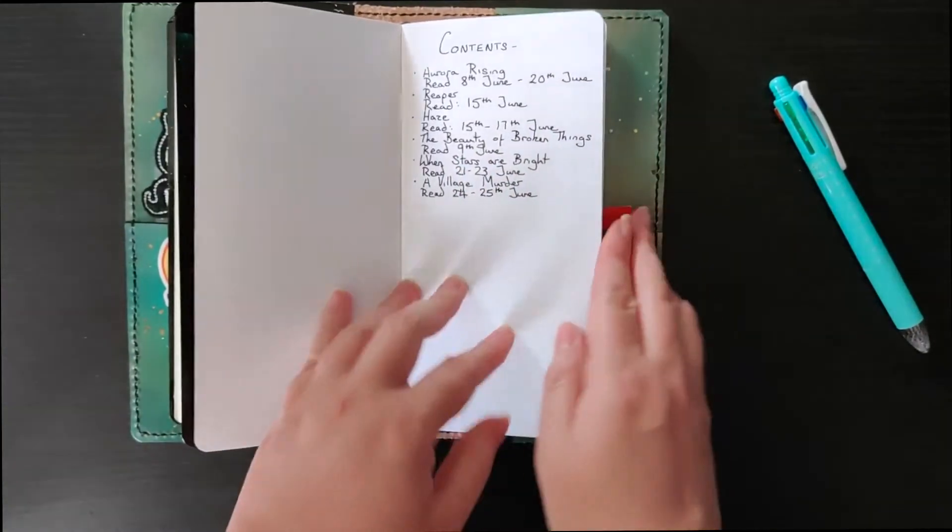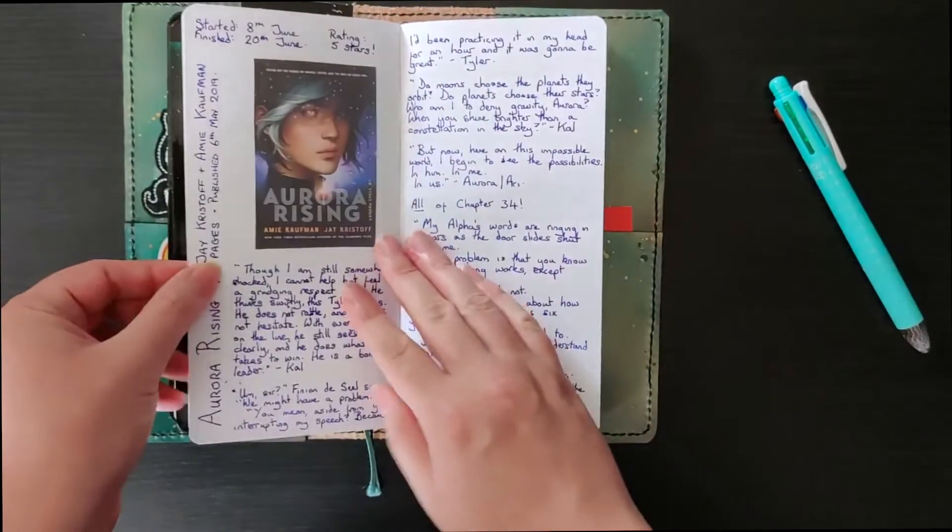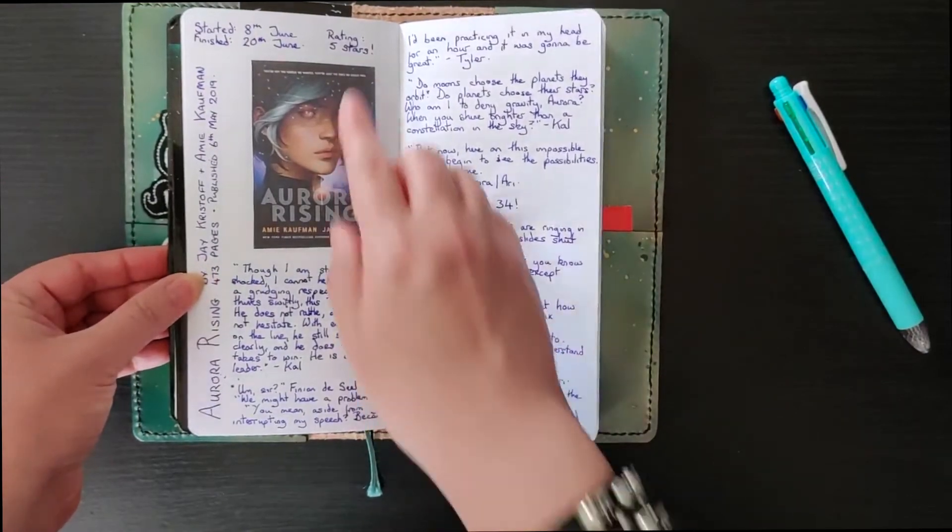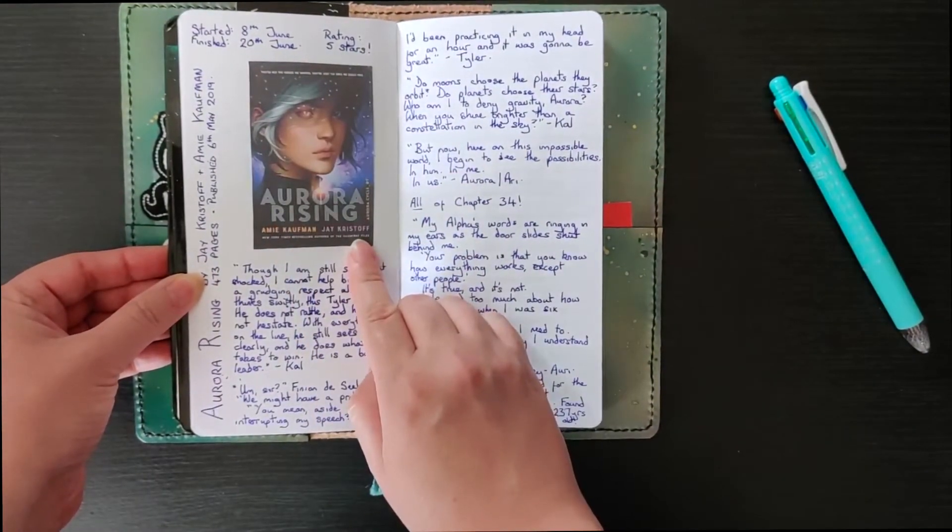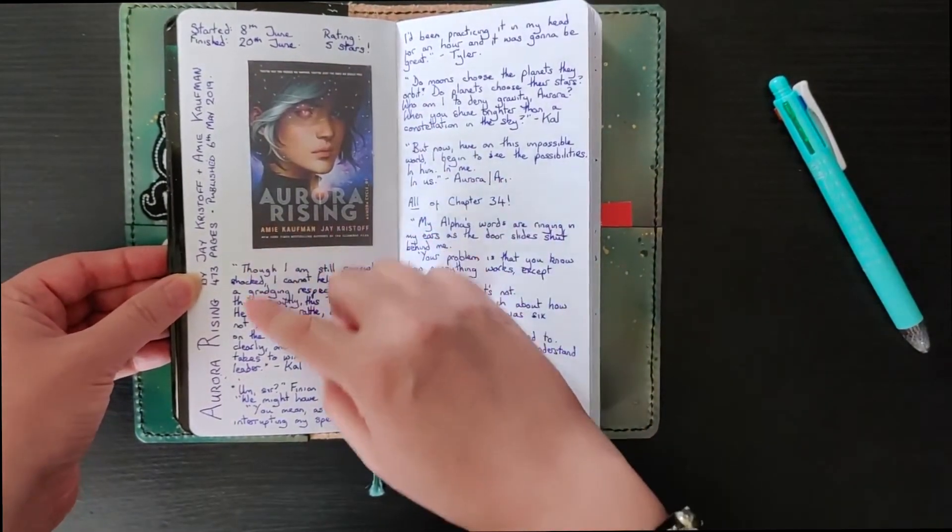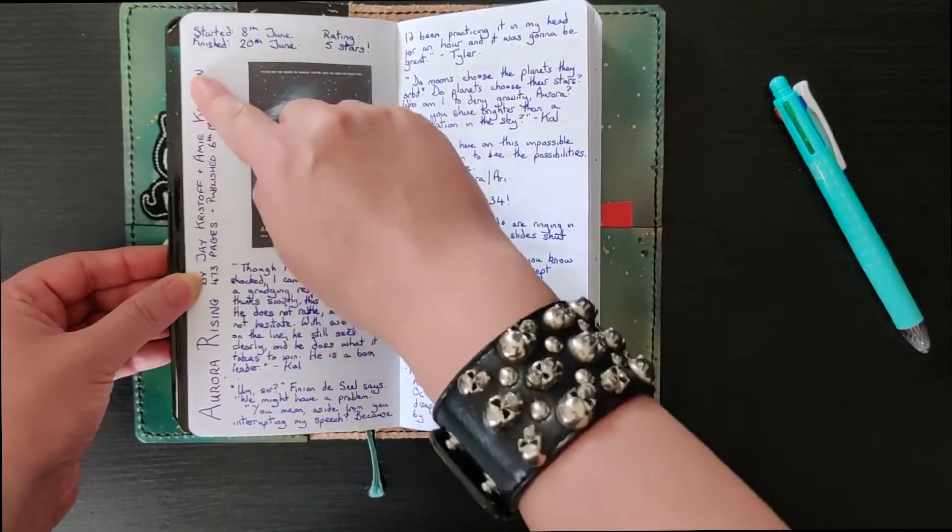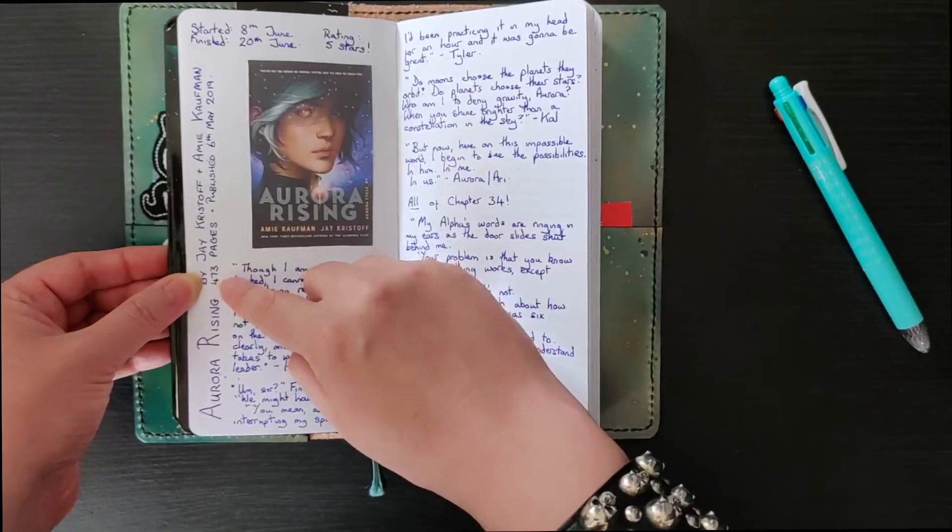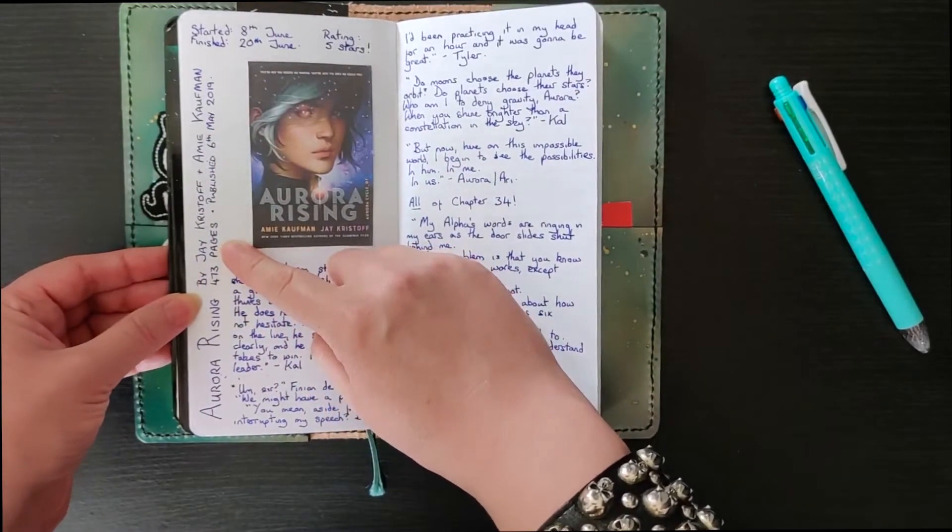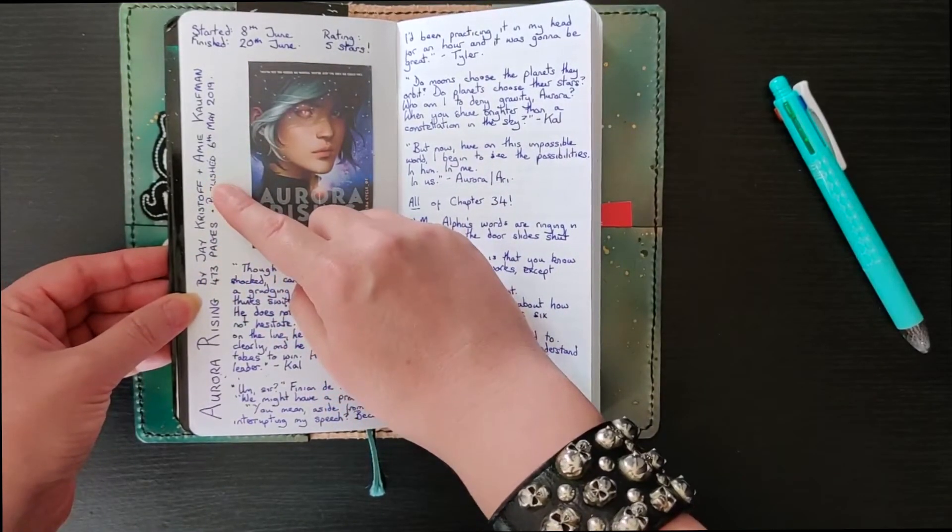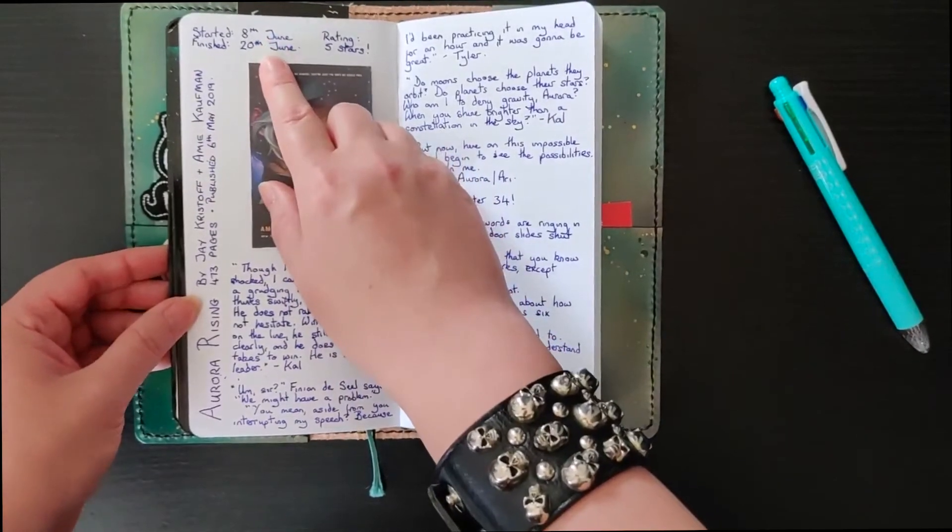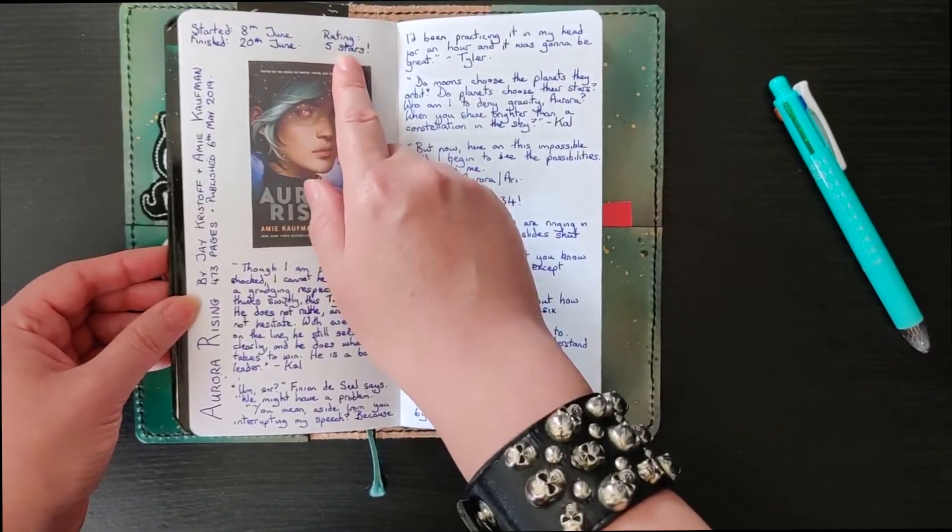So for each of the books that I read I print out just a nice picture of the cover and stick that in and I also then write the title and the author along the side of the page on the edge. I make a note of the page numbers, the date that the book was published, when I started and finished the book and also my rating.